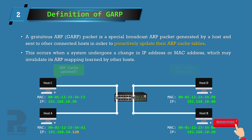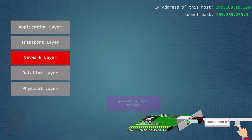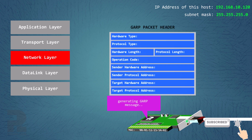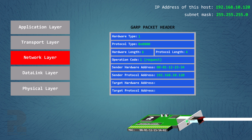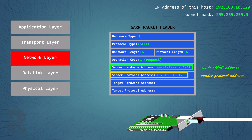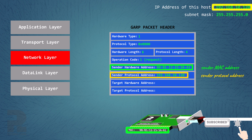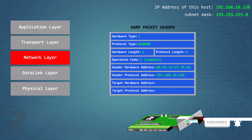However, the concept remains the same. A Gratuitous ARP message is generated as an ARP request message with the following parameter values. As seen here, the Sender MAC address and Sender Protocol address for IPv4 over Ethernet communications are the MAC address and IP address of the host interface sending this message. The Target Protocol address is also the protocol address of this host machine.